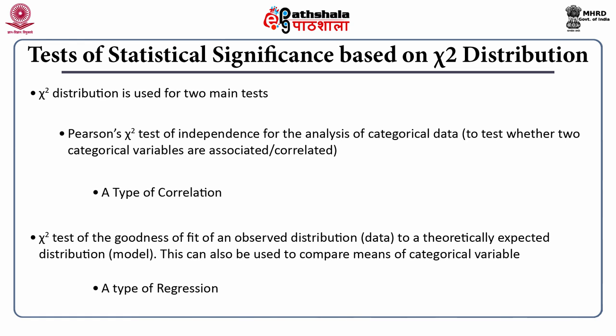The second test is called chi-square test of the goodness of fit of an observed distribution to a theoretically expected distribution — the model. So it is observed data versus the model where you expect your data to fit in. This chi-square test is a very good goodness of fit test for categorical variables. If your variables are not categorical and you are working with numerical or continuous data, you would use regression analysis instead.